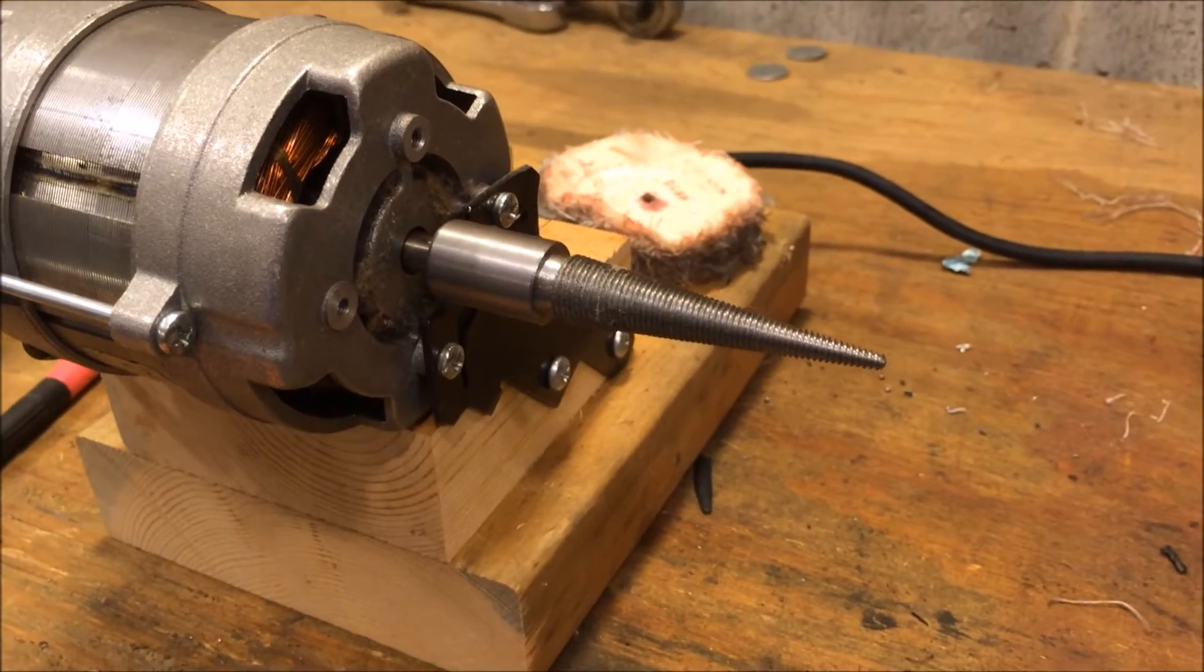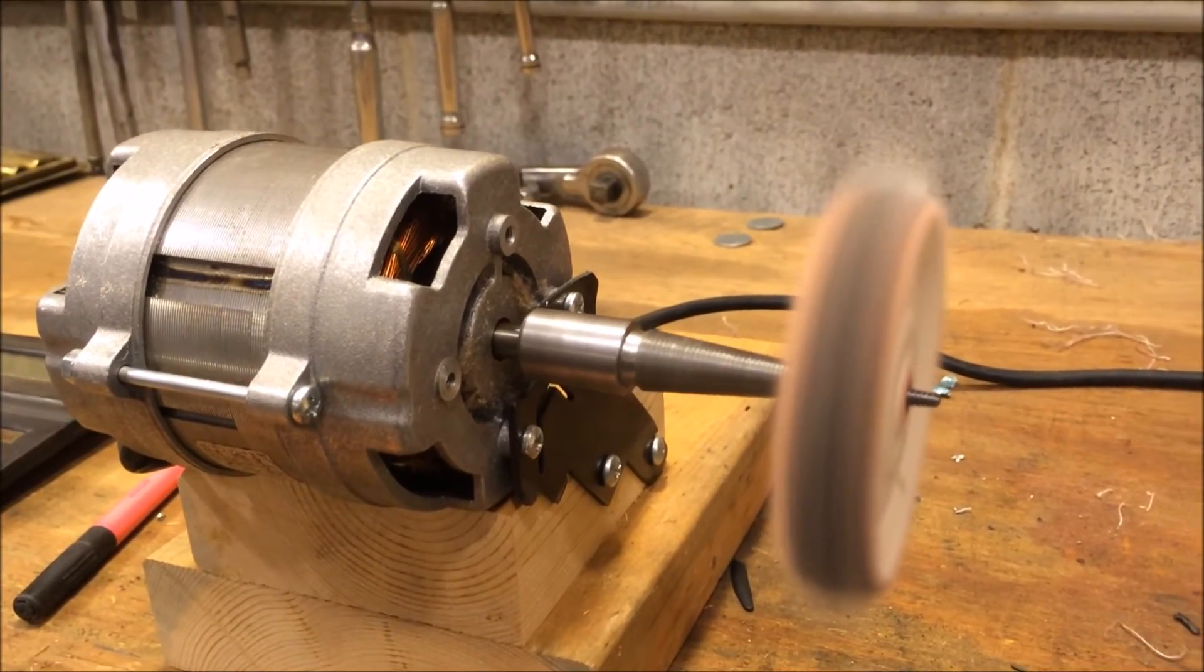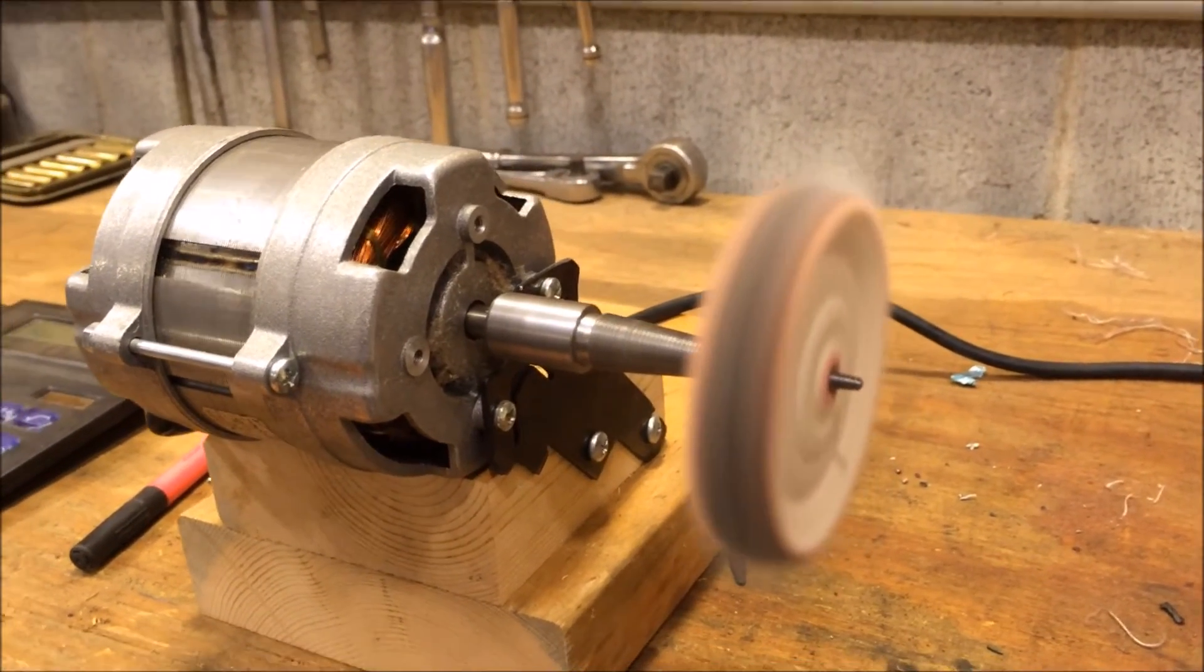This is the jeweler's buff. It just mounts on the end of the motor. That's the buff held on there. Thank you for watching.